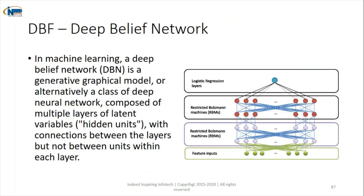The thirty-ninth algorithm is deep belief networks. The word 'deep' is used because there are many hidden layers. In the diagram, we have multiple layers of RBMs followed by logistic regression applied at the output. It is a generative graphical model — a class of deep neural networks composed of multiple layers of latent variables. Because of these multiple layers, it is called a deep belief network.